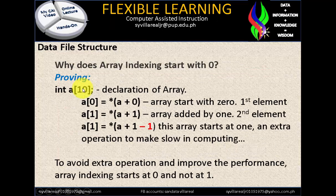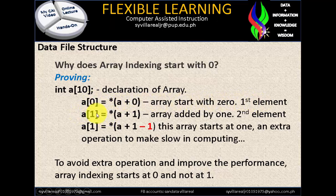Why does array indexing start with zero? If we declare integer a[10], 'a' is a variable and with the square bracket we have 10 storage spaces. 'a' starts with zero — that is the index. If we were to start at 1, the declaration would be: a[1] equals multiplied by a function of a plus 1 minus 1, which creates an extra operation that slows down computing.